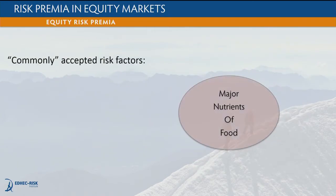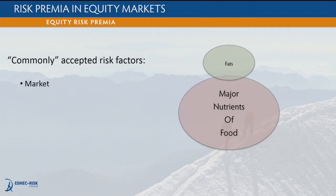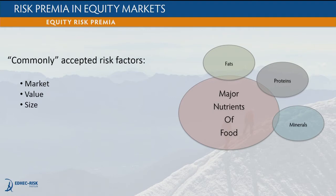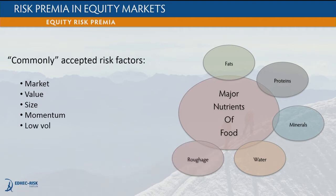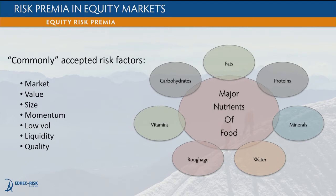Think about the commonly accepted risk factors in equity markets, just like the major nutrients when looking at food. The first is the broad market exposure — think of fats as one major nutrient we sometimes get too much of. The next is value exposure, similar to protein as a useful nutrient. Size has been introduced as the third most meaningful factor explaining differences in risk and returns across stocks, somewhat similar to minerals. Then you have momentum, low volatility, liquidity, quality, and others.